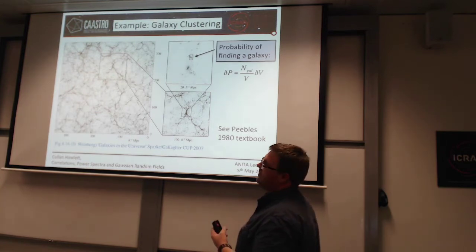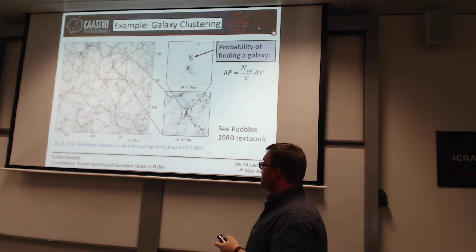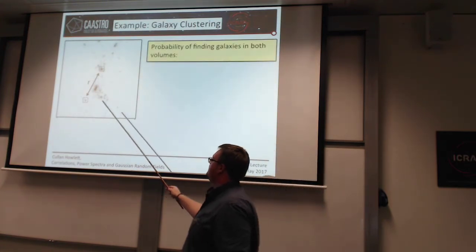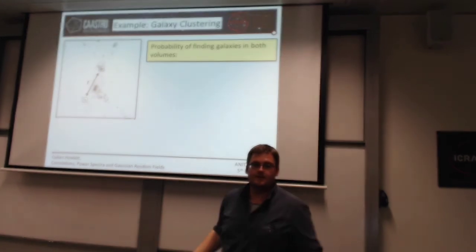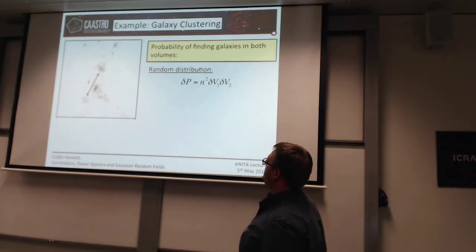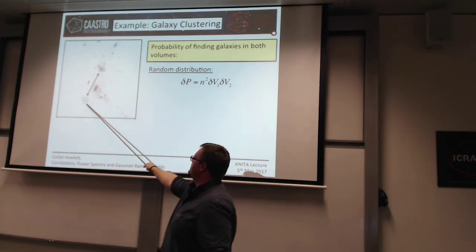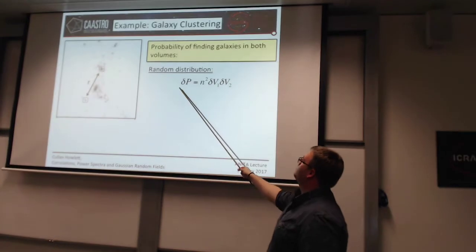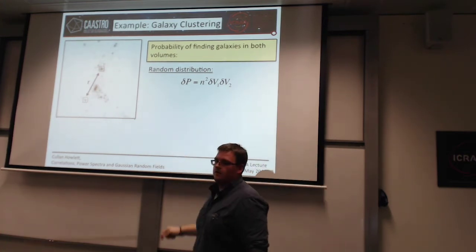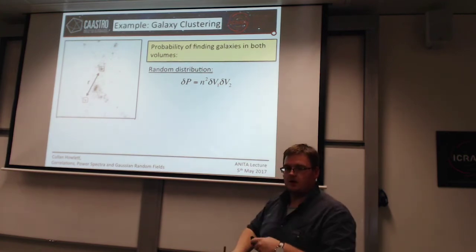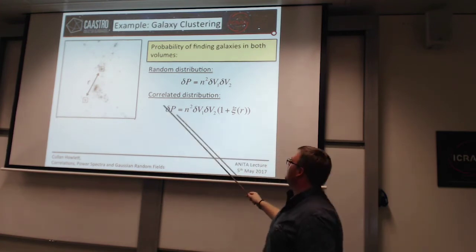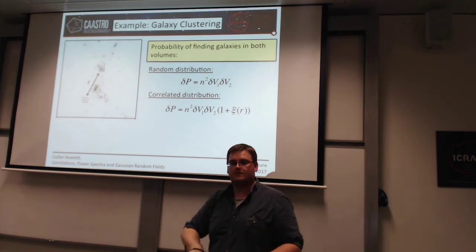Now what happens if instead of finding a galaxy at a single point, I want to find two galaxies separated by some distance? We have to consider the probability of finding a galaxy here and a galaxy here. For a random distribution, it's basically the probability of finding a galaxy at each location multiplied together. But if these two things are correlated, this is no longer the case — instead we can say the chance of finding both is the same as a random distribution, multiplied by the excess probability above random, which is the correlation between the two things.